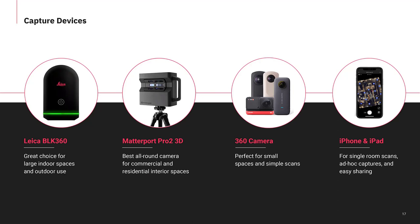Matterport supports a few different devices. To create point cloud data — the information we want to import into software tools — you can use either the Leica BLK360 or the Matterport Pro2 3D camera. Today's presentation focuses on the Pro2, which is for interior scanning. The BLK360 provides interior and exterior scanning at roughly $25,000 Canadian and above. The Pro2 is more scalable and easier to use, starting at around $4,000 Canadian, and is the gold standard for 4K interior scans with 99% accuracy for interior point cloud.